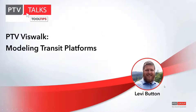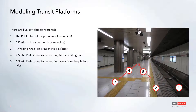Let's start with modeling transit platforms. We're going to focus on the main objects and some tips and tricks on how to model those efficiently. In Vissim and Viswalk, the mesh point between the vehicular network and the pedestrian network is at the platform level.